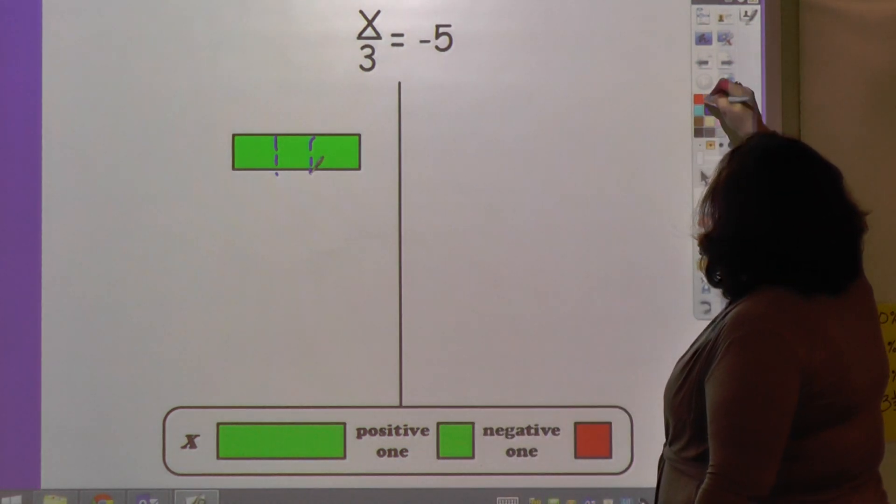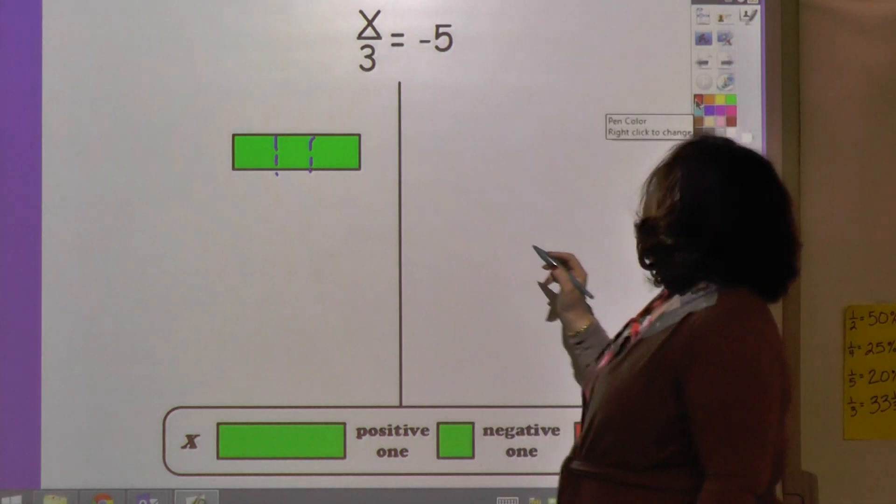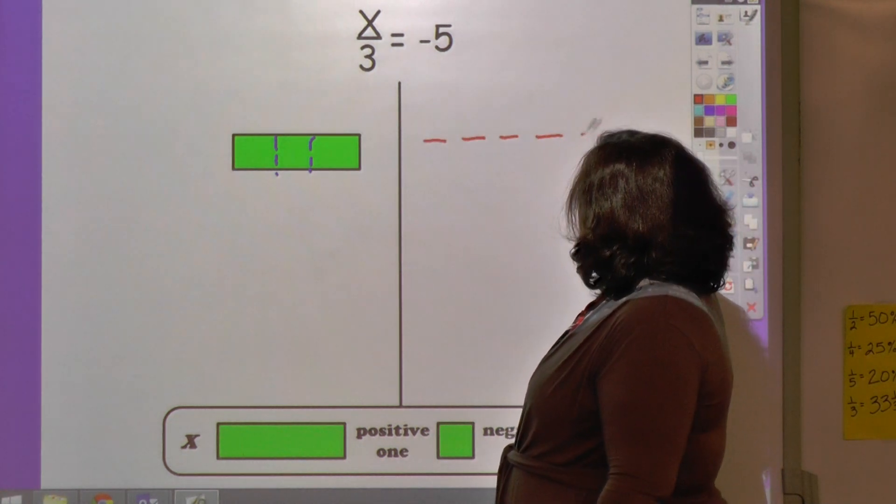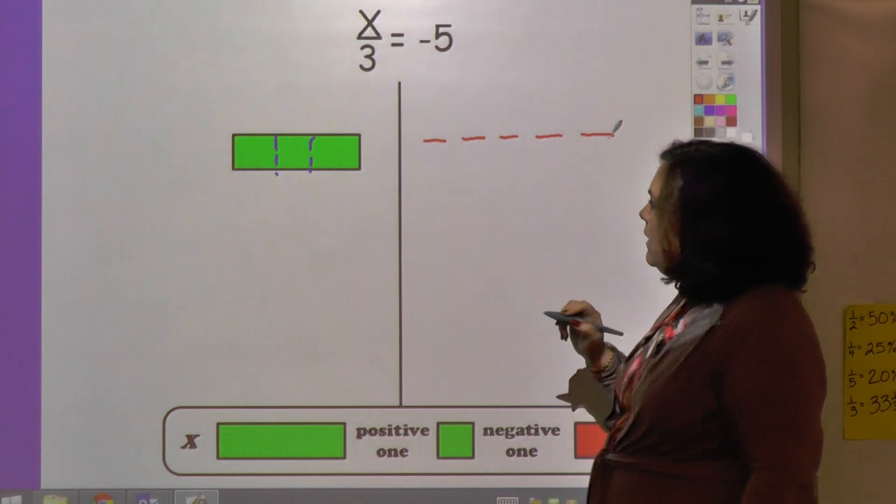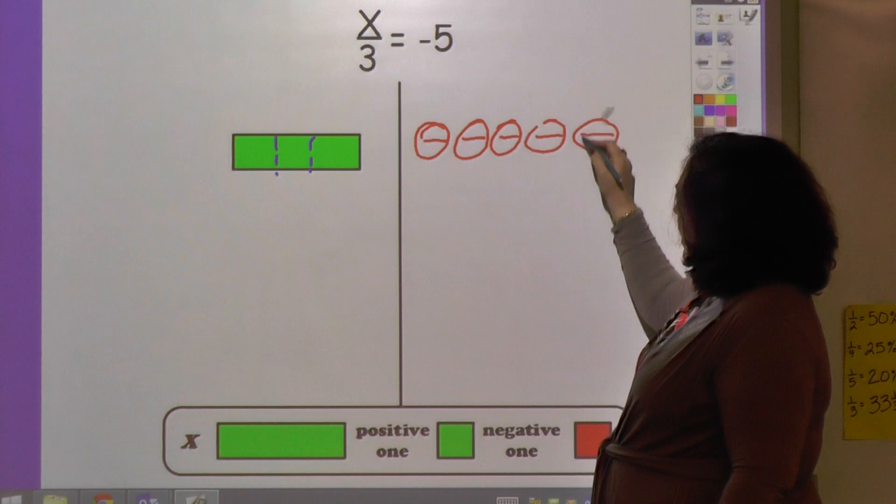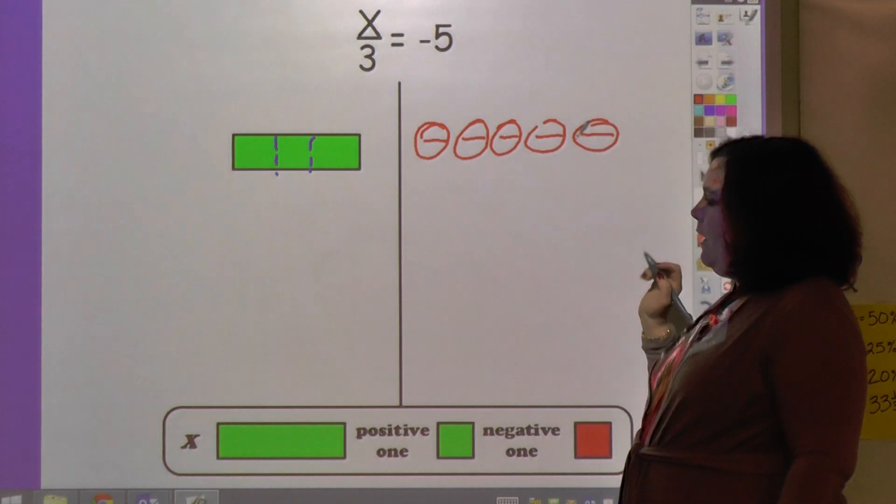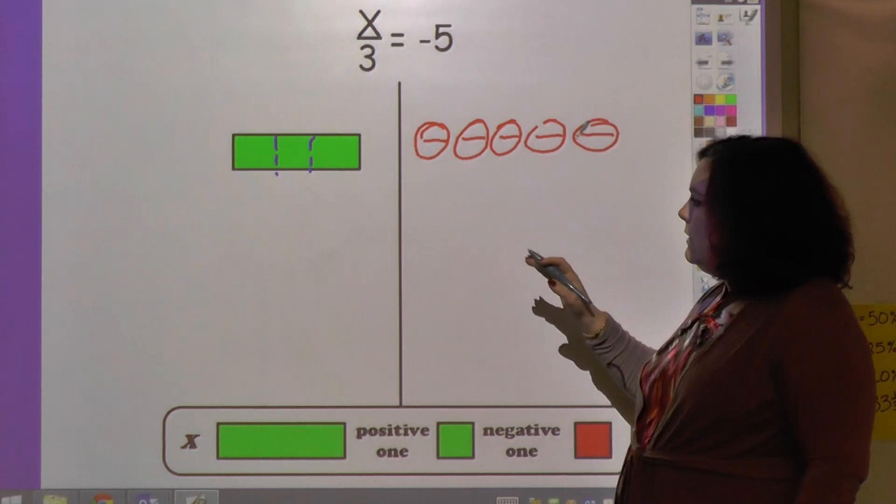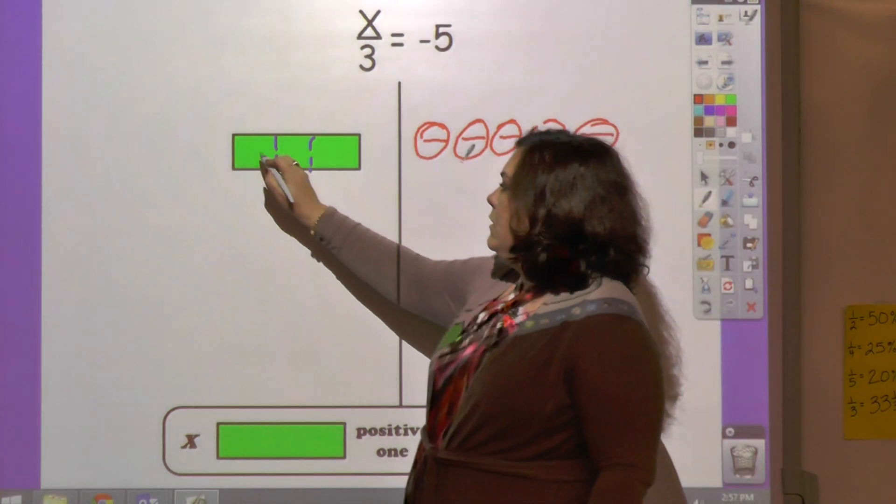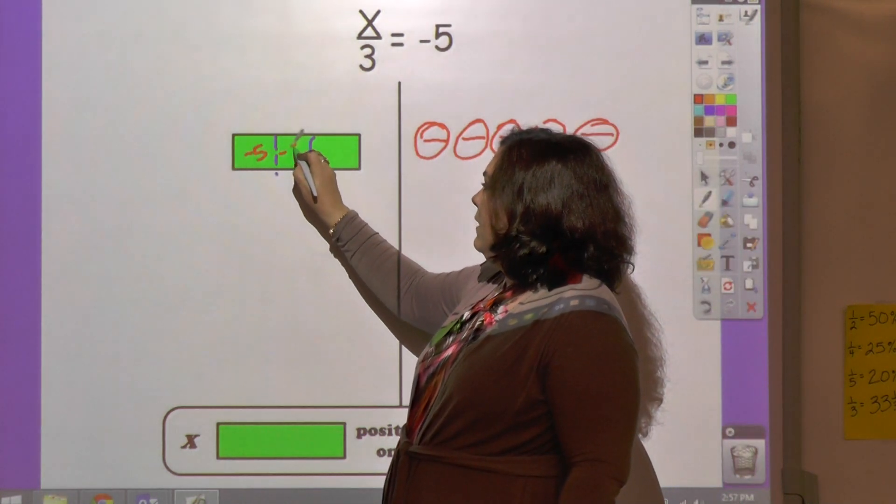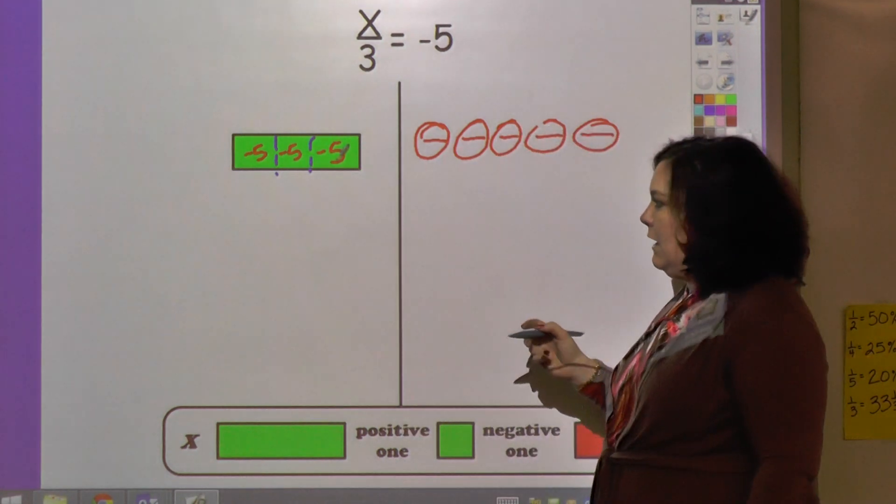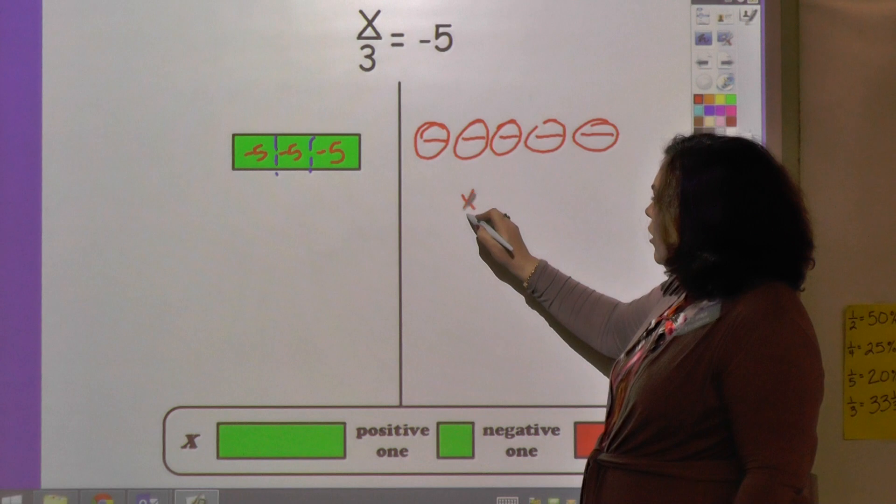And instead of pulling these squares up, I'm just going to represent it with lines. And we'll make them circles. There we go. And so that's negative 5. This is saying negative 5 goes in each one of these. So that's negative 5, negative 5, negative 5. And of course that adds up to negative 15.